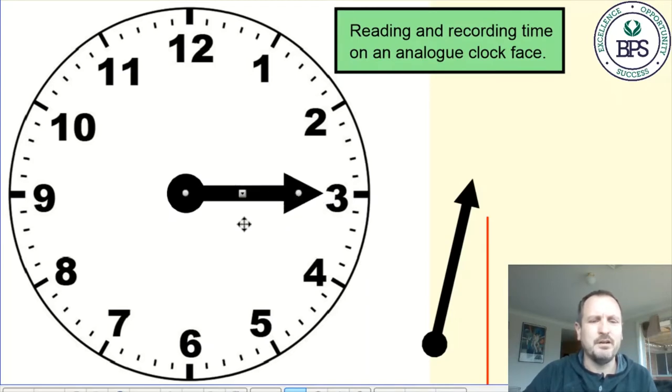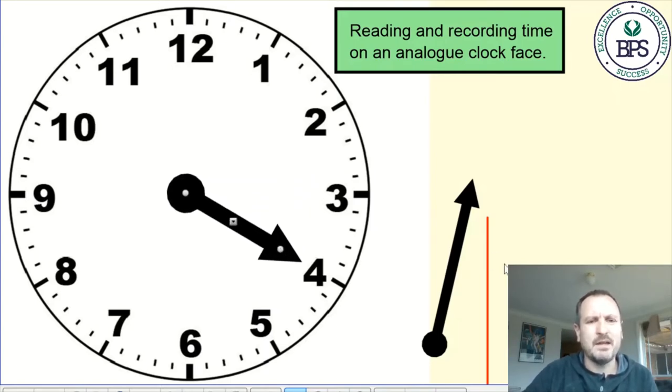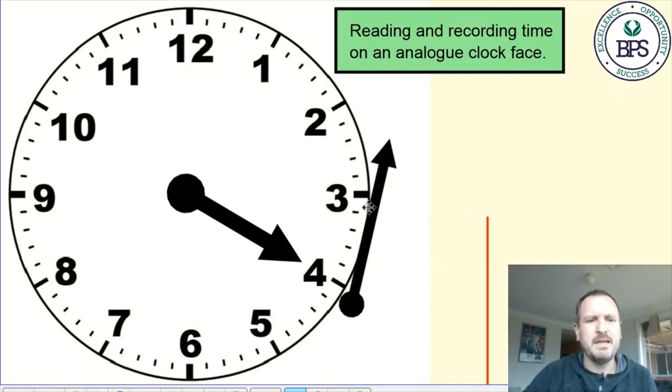The hour hand is usually the shortest hand on the clock and often it will point to the larger numbers that are written around the edge of the clock. I've just put one onto my clock pointing at the three, so that would be three o'clock, that would be where it would be at four o'clock. The other hand is often longer and sometimes thinner too, and that is the minute hand.